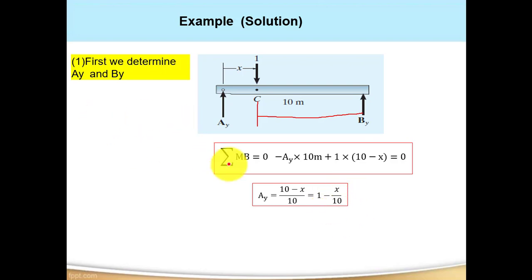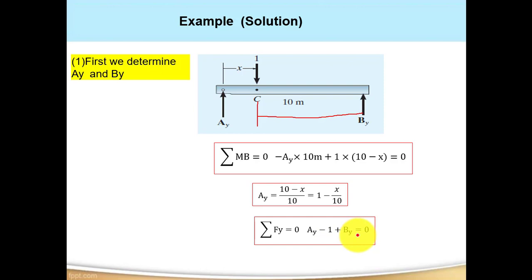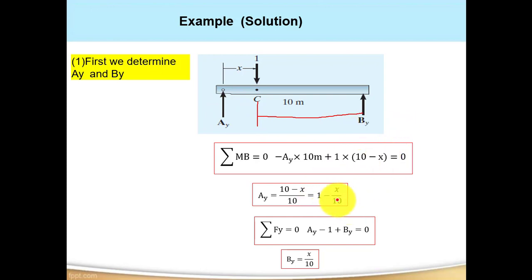For By, using summation of forces in the Y direction equals zero: Ay − 1 + By = 0, so By = X/10. These equations are valid for X between 0 and 10. For example, at X = 0, Ay = 1 (maximum value); at X = 10, Ay = 0. For By, at X = 10, By = 1 (maximum value); at X = 0, By = 0.